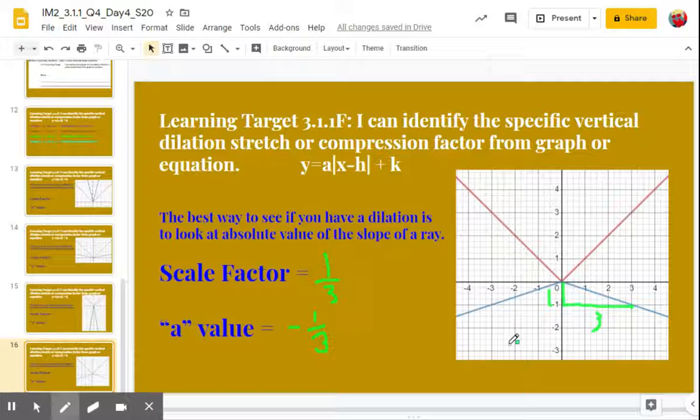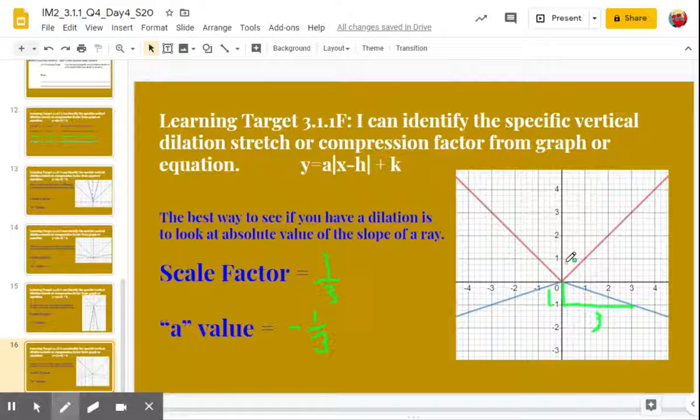All right, so that's how you can see the A value or the dilation value in the graph. You think about slope, and we just know we don't care if the slope is positive or negative. If the V opens up, we know the A value is positive. If the V opens down, we know the A value is negative. Thank you.